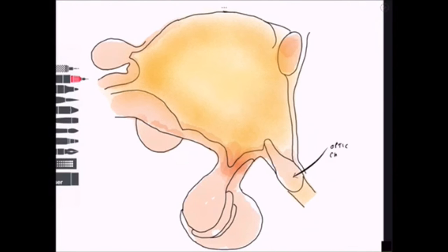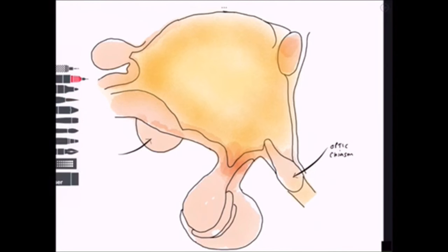Here we have the optic chiasm anteriorly — look out for that, as it forms a lower border of the hypothalamus, and it's of course where we get decussation of those optic nerve fibers.